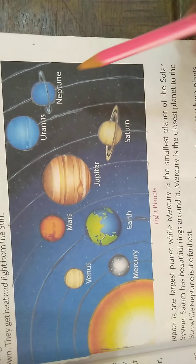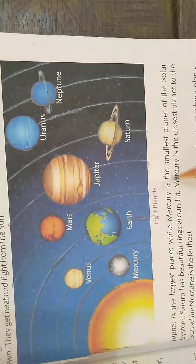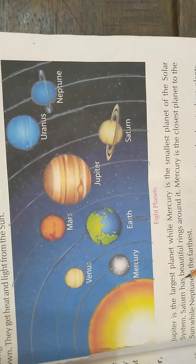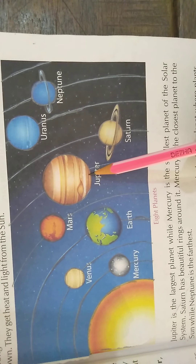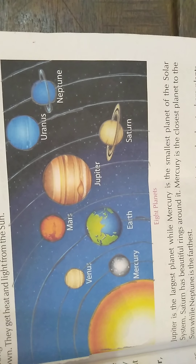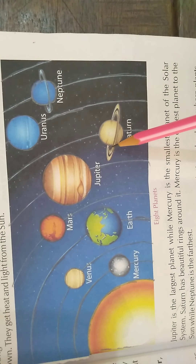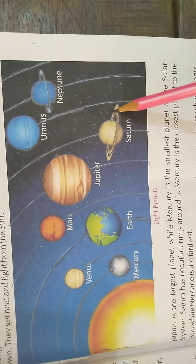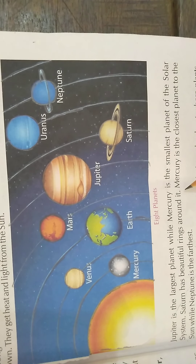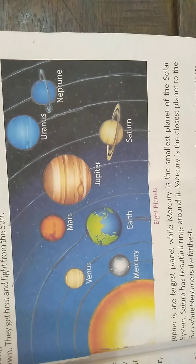Jupiter is the largest planet while Mercury is the smallest planet of the solar system. Mercury is the closest planet to the sun while Neptune is the farthest.